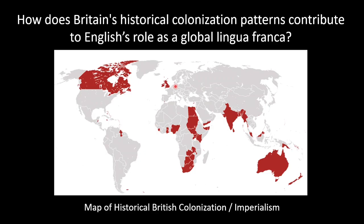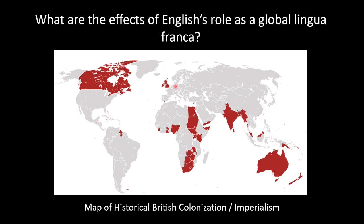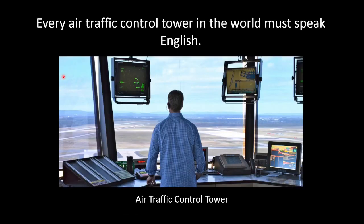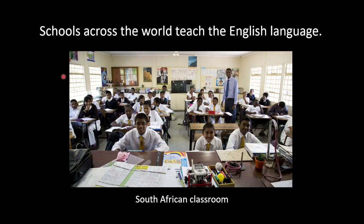What are the effects of English's role as a global lingua franca? When colonizers came to the United States, people spoke various languages — the natives spoke their own languages. Because English had a high role from the colonizers, this led to a decline in native languages, which means a decline in folk culture and traditional culture in society. This also increases the amount of speakers. Every air traffic control tower in the world must speak English — that's because it's a lingua franca. Schools across the world teach the English language; here's an example of a South African classroom where they are learning English.